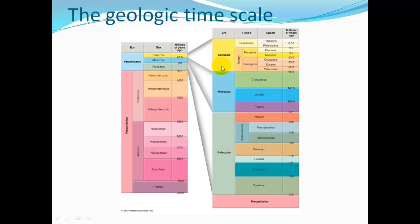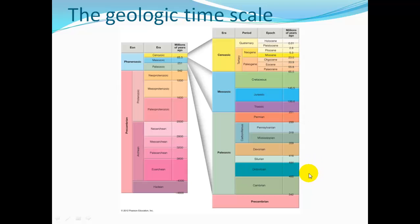The Cenozoic includes the Quaternary period. We are currently in the Holocene epoch, and before the Holocene was the Pleistocene. The Mesozoic includes the Cretaceous, Jurassic, and Triassic — the age of the dinosaurs. The Paleozoic includes the Permian, Carboniferous, Devonian, Silurian, Ordovician, and Cambrian periods. Before we have all the fossils, we have the Precambrian Eon.